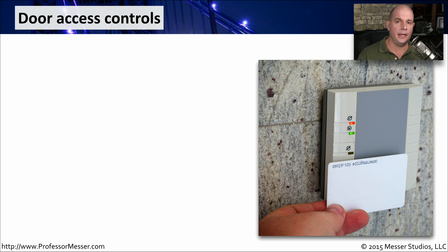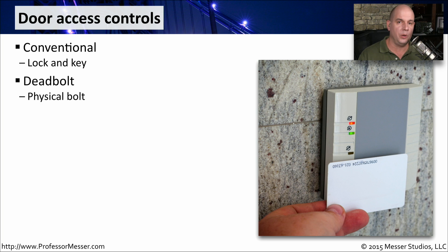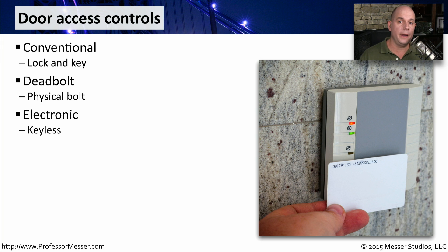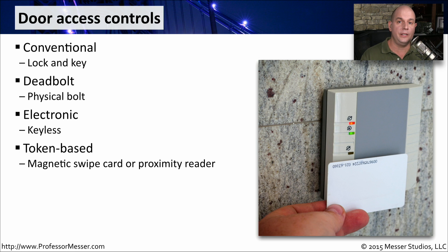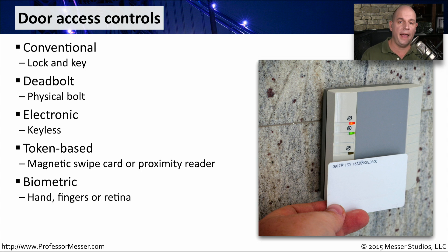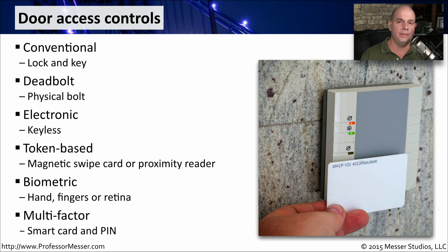When you think of physical controls, you often think of a door lock, but there are many different kinds. There's the traditional door lock with a lock and key, and some folks will need a deadbolt for additional security. There are also electronic locks that don't require a key — some are token-based, where you swipe a magnetic card or use a proximity reader to gain access. It might also require biometrics, such as a finger or handprint, or even a retina scan. Sometimes you add additional factors on top of that, like smart cards or PIN numbers along with a key or biometric, which provides much more security and confirms that you have access through that particular door.